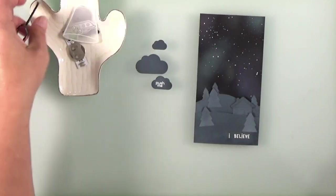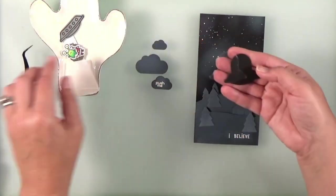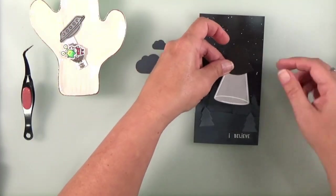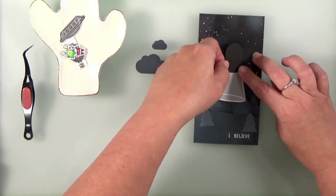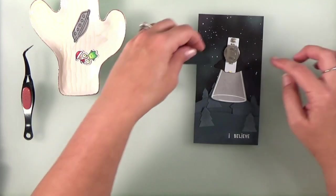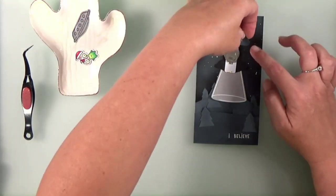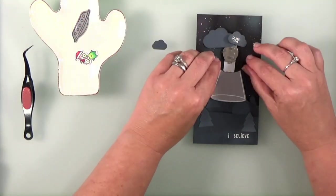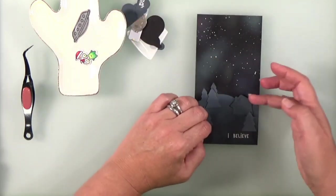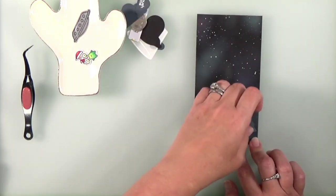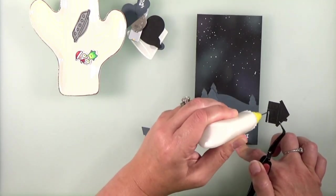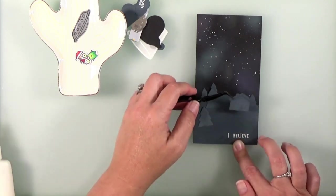But before I glue any of this down, I do want to bring in the other pieces too so that I know how high up that second hillside should be. I also don't want to lose all of the trees and the log cabin underneath the tractor beam, because even though it's vellum you won't see much of them. So I'm just going to lay it all out first before I glue it down. Then I like the placement so I can go ahead and start gluing. I'm going to glue that log cabin to the back hillside.